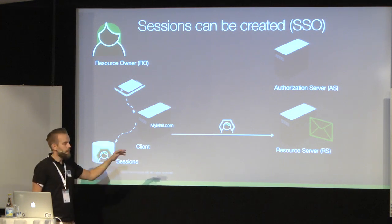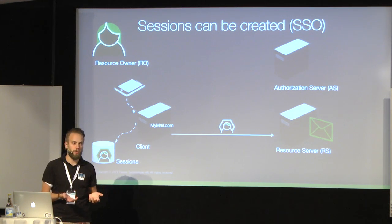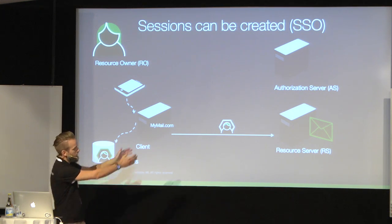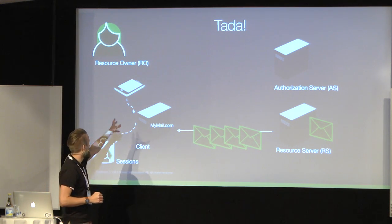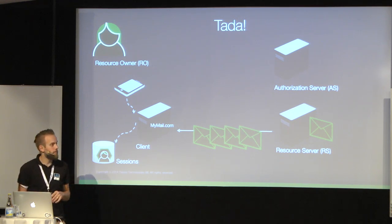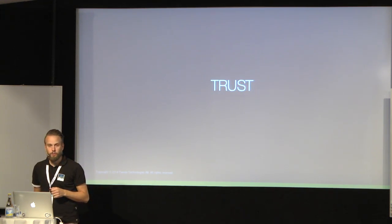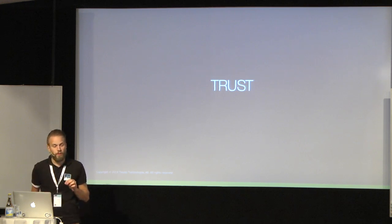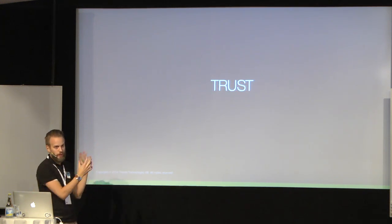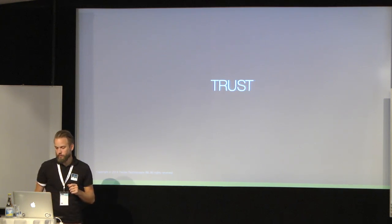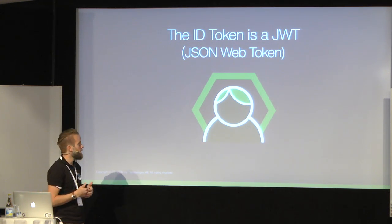The ID token is not really sent away - it's just used for knowing stuff about the user, without having to build your own authentication service and have users create passwords in your service. The most interesting part that ID tokens gave us was trust - they increased trust between the authorization server and the party who relies on the tokens, the client. This trust is manifested by the ID token, which is what David also mentioned: a JSON Web Token or JWT.